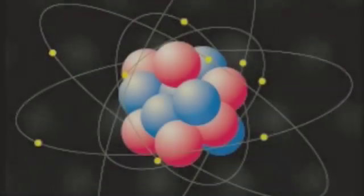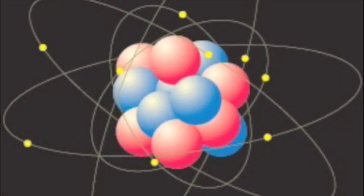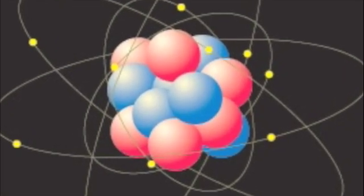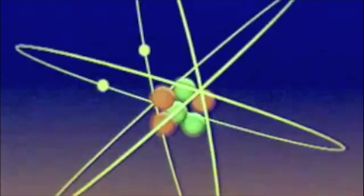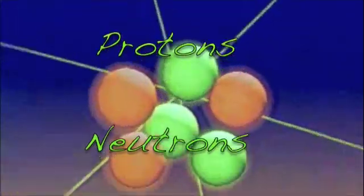As we get further and further into the CD, we're able to see under much magnification the atoms that make up the object. The atom includes three subatomic particles: the electrons, the protons, and neutrons.